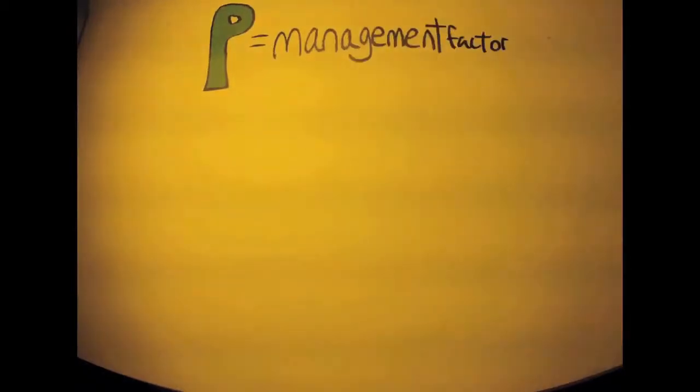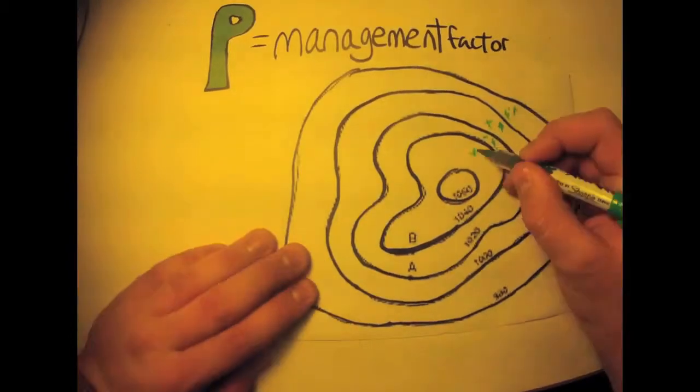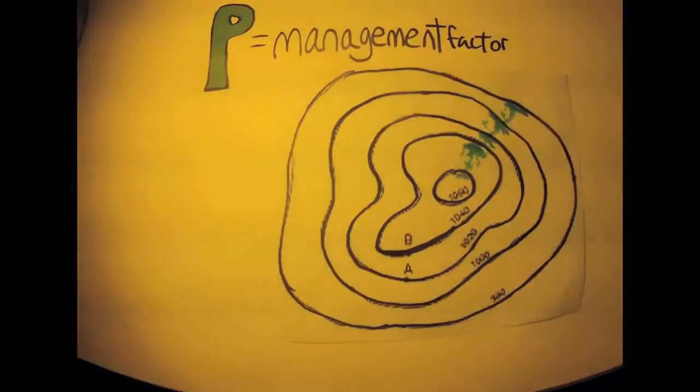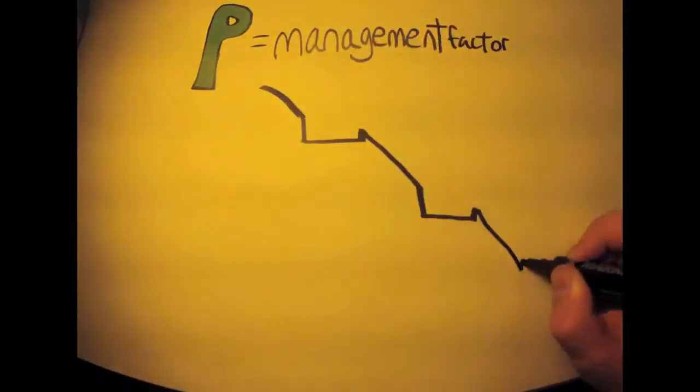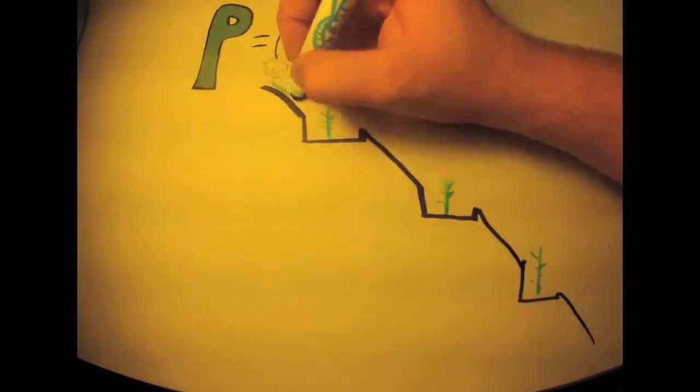P is the management factor, which represents practices farmers use to reduce soil loss. Contour cultivation is when rows of crops match the contours of lands to slow runoff. Terracing is used to slow and catch water in very steep areas.